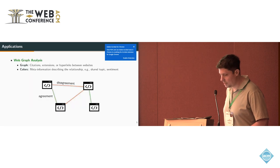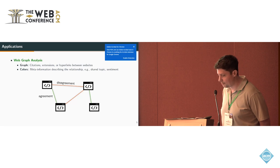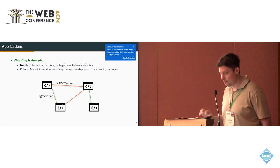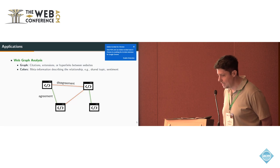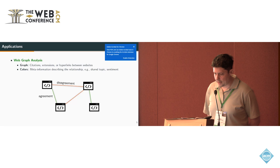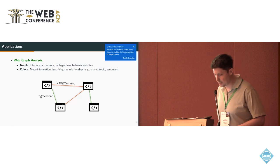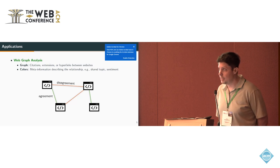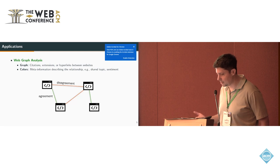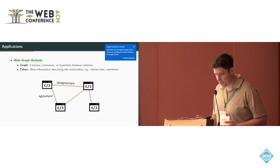What are the possible applications for this? One would be web graph analysis. Here the graph consists of web pages represented by the nodes, and edges between these web pages could be citations or hyperlinks. The colors of the edges represent the meta information describing the relationship - in this example, agreement or disagreement. The goal is to find a dense subgraph that has some diversity constraints, for example, we want to have a dense subgraph that has both agreement and disagreement between the web content.